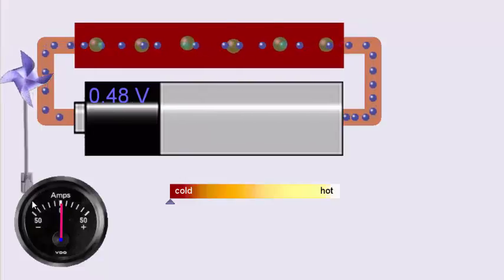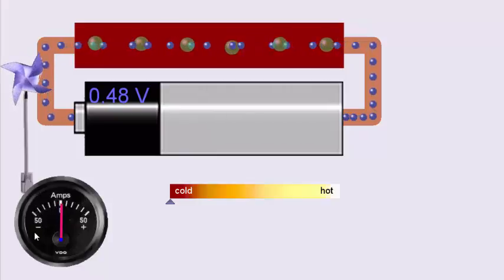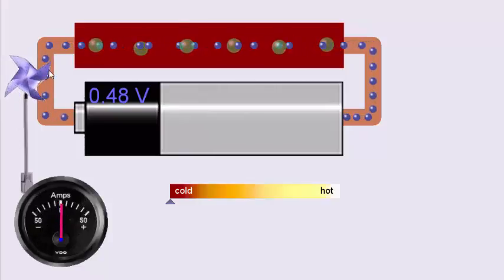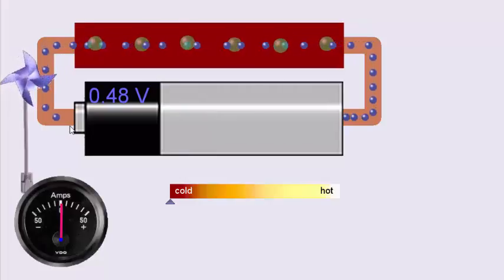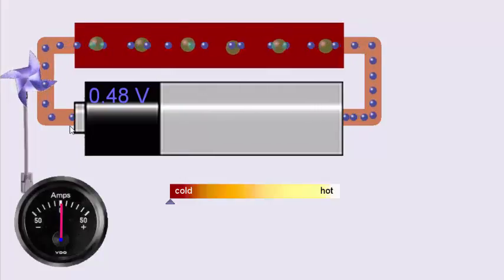So on the left hand side here I've got a little, essentially it's an ammeter, it's something that's measuring the amount of charge going past that point per second, so the number of coulombs per second. Note in real life ammeters don't look like fans.